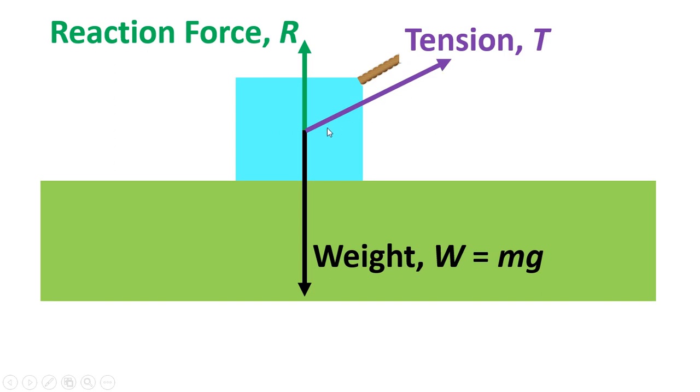There's also going to be a tension in the rope. So this is the force along the axis of the rope. And then also there'll be friction pulling back on the object, resisting the motion of the object.